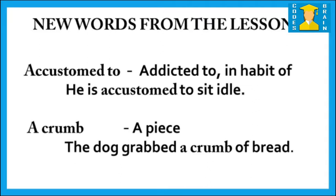Now let's study some new words and their meanings, and also some important questions and answers from this lesson. First word: 'accustomed to' — which means addicted to or in the habit of. Example: he is accustomed to sitting idle. Next word: 'crumb' — crumb means a piece. Example: the dog grabbed a crumb of bread.